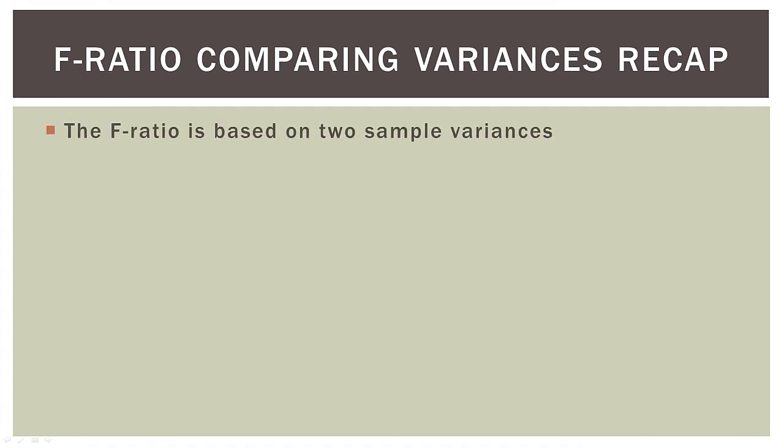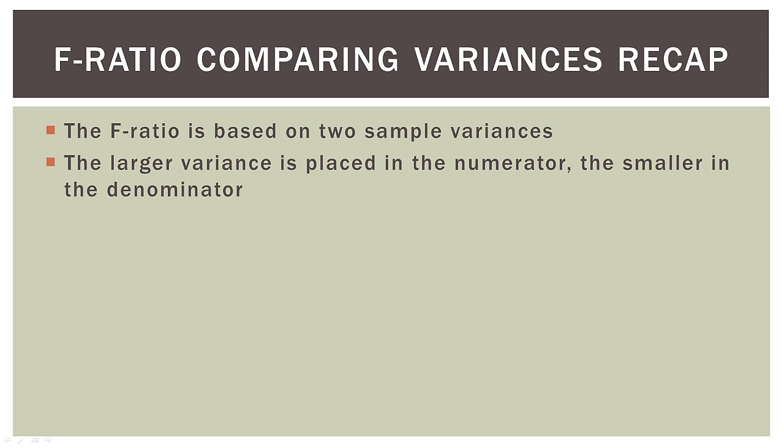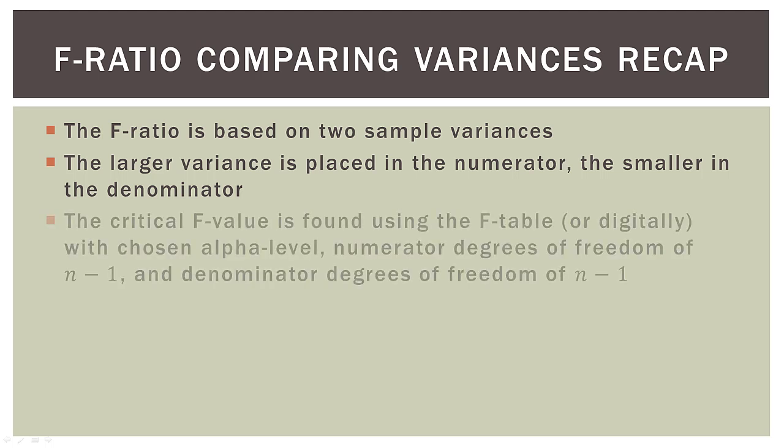Okay, I recap and then we're done. So remember, the F ratio is based on two sample variances. The larger variance is placed in the numerator, the smaller in the denominator.